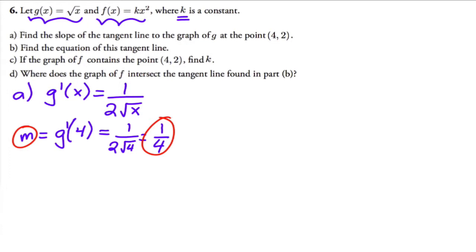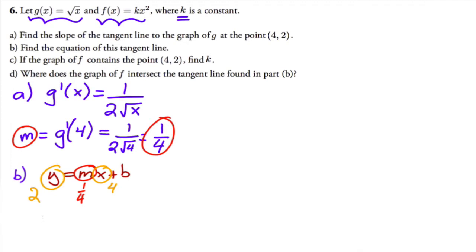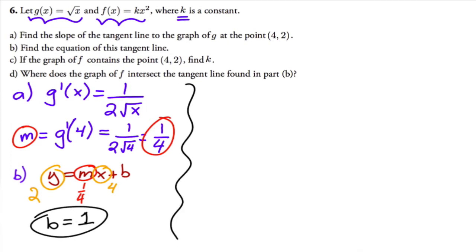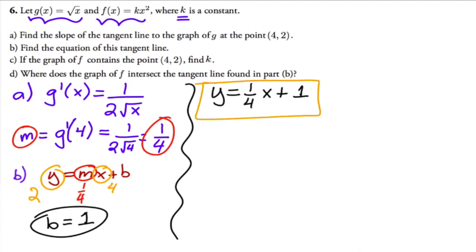Now to find the equation of the tangent line, I use y equals mx plus b. I know the slope is one fourth and the point is (4, 2), so plugging in: 2 equals one fourth times four plus b. That gives 2 equals 1 plus b, so b equals one. Therefore the equation of the tangent line is y equals one fourth x plus one.